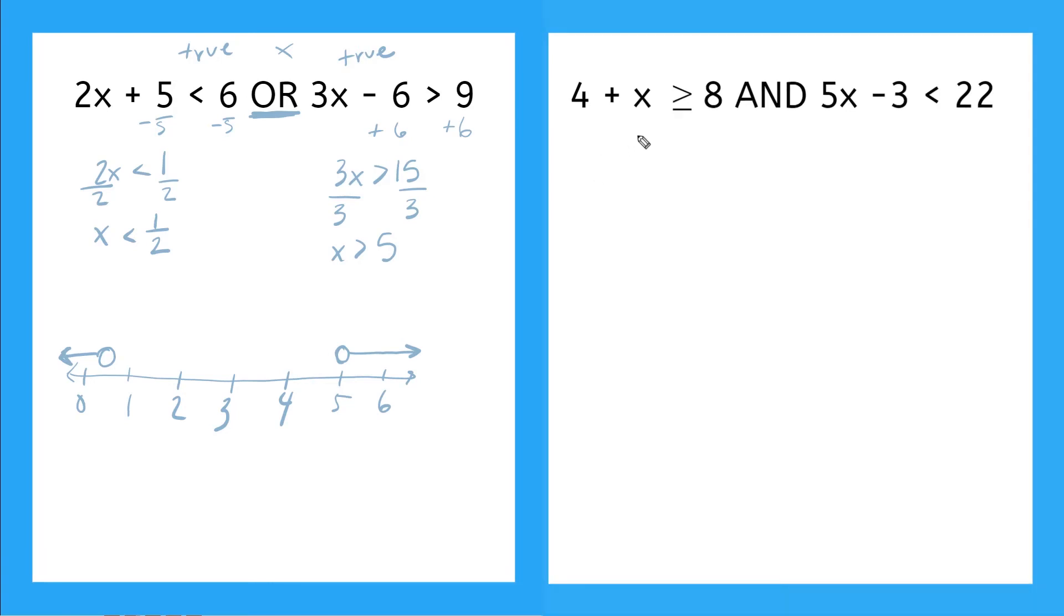Okay, so going over to our other one here, we have 4 plus X is greater than or equal to 8. And 5X minus 3 is less than 22. So if I have an AND compound inequality, what does that mean? Yeah, so this one has to be true. And at the same time, this one over here needs to be true. So they both have to be true at the same time.